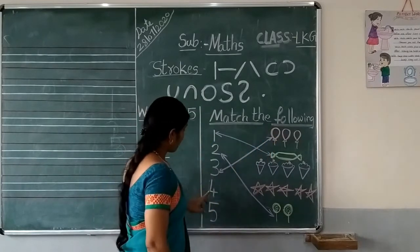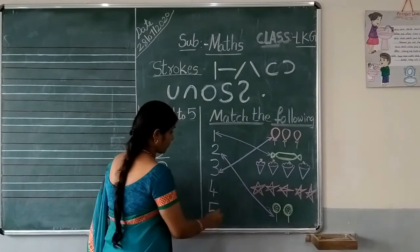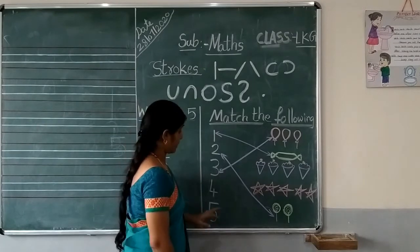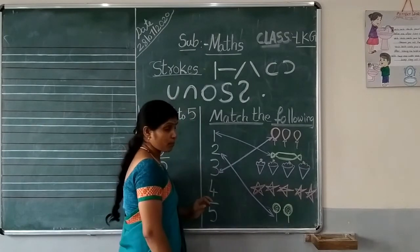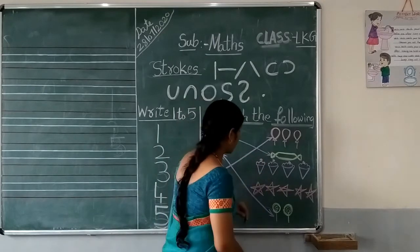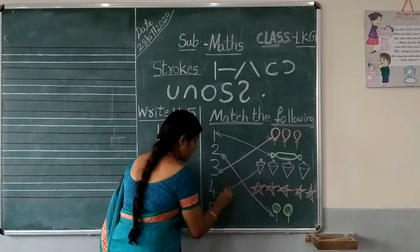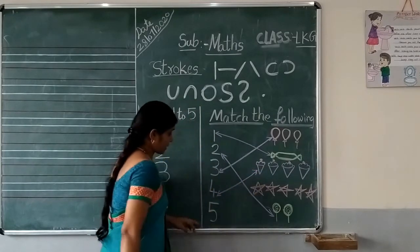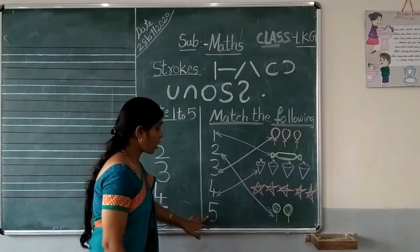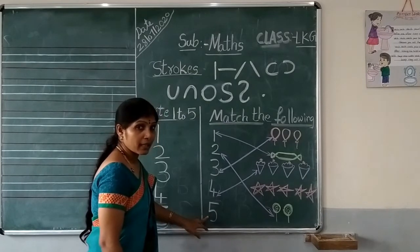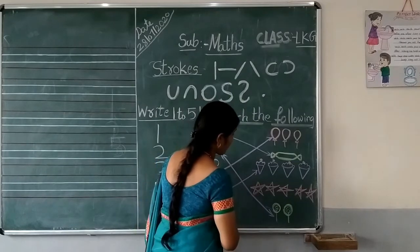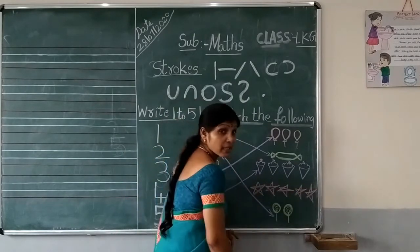3. 4. 3 after 4. Here, how many objects we need? 4 objects. Come on children, let's find out where the 4 objects are. Yes, here. 4 objects. How many objects we need? Yes, 5 objects. Where are the 5 objects? Let's find out. Yes, here we have 5 stars.